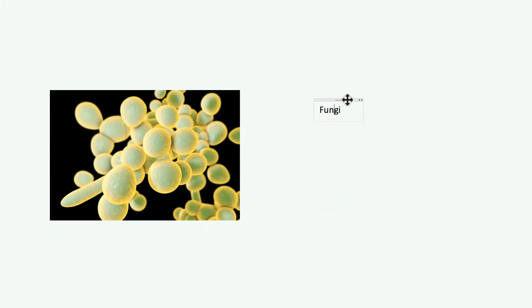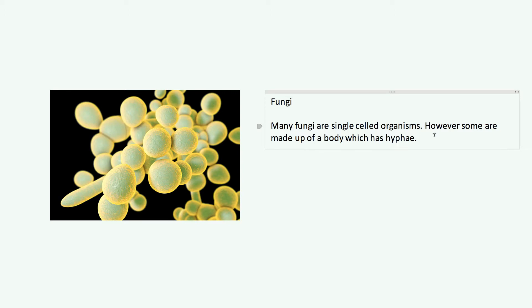Well that's protists. Next one is fungi. So many fungi are single-celled organisms as well. However, some fungi are made up of a body which has hyphae. Now these hyphae are long projections. They're long, thin, thread-like structures which can actually penetrate into things. That includes human skin, it includes tree barks, it includes all sorts of things. So the hyphae are long, thread-like extensions which can penetrate things like human skin and cause disease.